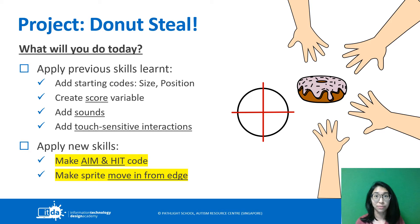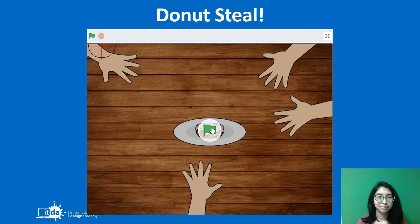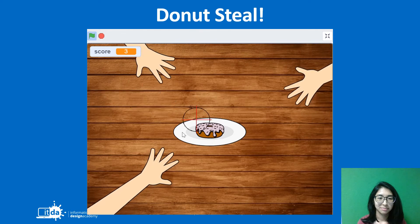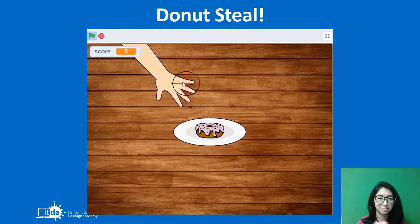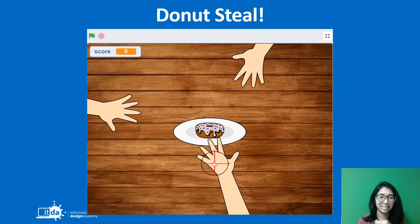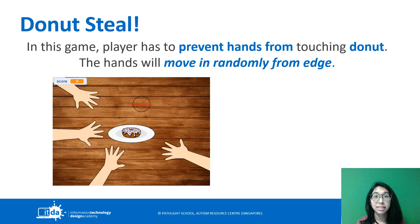So let's take a look at how it works — we're going to watch a video first, then we'll understand better. In this game, the player has to prevent all these hand sprites from touching or stealing the donut.